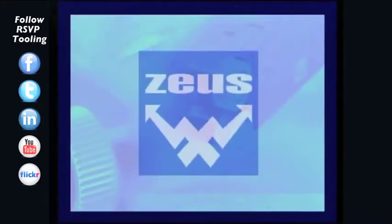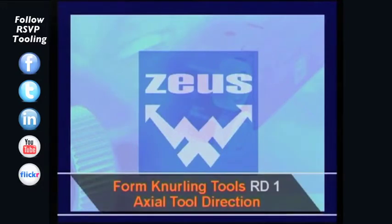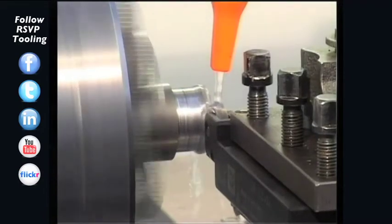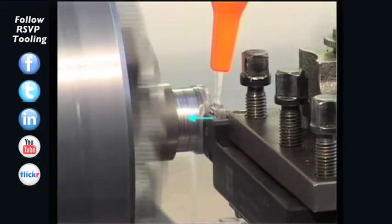Form knurling tools RD1, axial tool direction. With the Zeus RD1 series, it is also possible to work in the axial tool direction.